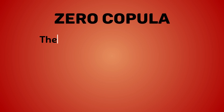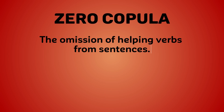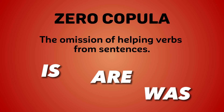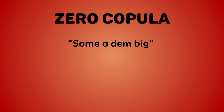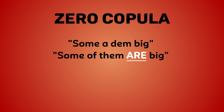First, let's talk about zero copula. In zero copula, we omit auxiliary or helping verbs from sentences. When I say auxiliary verbs, I mean words like is, are, was, were, have. Look at this example: 'Some of them big.' If we translate this sentence to standard Caribbean English, we would have 'some of them are big.' The helping verb 'are' should be between 'them' and 'big,' but by using zero copula, we take it out completely.